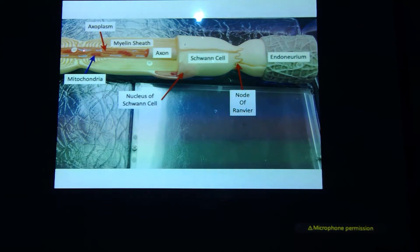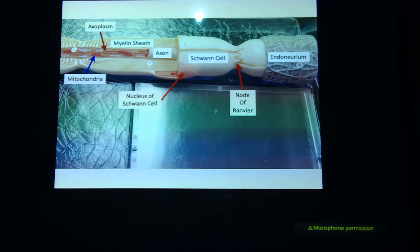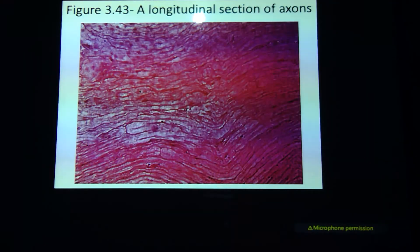Axoplasm, mitochondria, there's my node of Ranvier, here's my Schwann cell, here's the myelin sheath, there's that node of Ranvier all covered up, and then you've got that endoneurium — that connective tissue layer that surrounds every single axon.